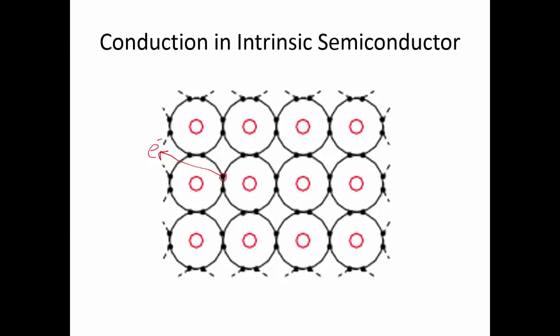But what we have left behind is a hole where that electron used to be, and that hole is going to be positively charged. Conduction in an intrinsic semiconductor consists of these free electrons freed from the crystal structure by thermal energy, along with these positive holes, which are kind of bound to the crystal structure but not bound in place. If I apply an electric field across the semiconductor — positive on one side, negative on the other — all those free electrons are going to move toward the positive side, and this hole, which we can consider a free charge carrier, is going to move towards the negative side.